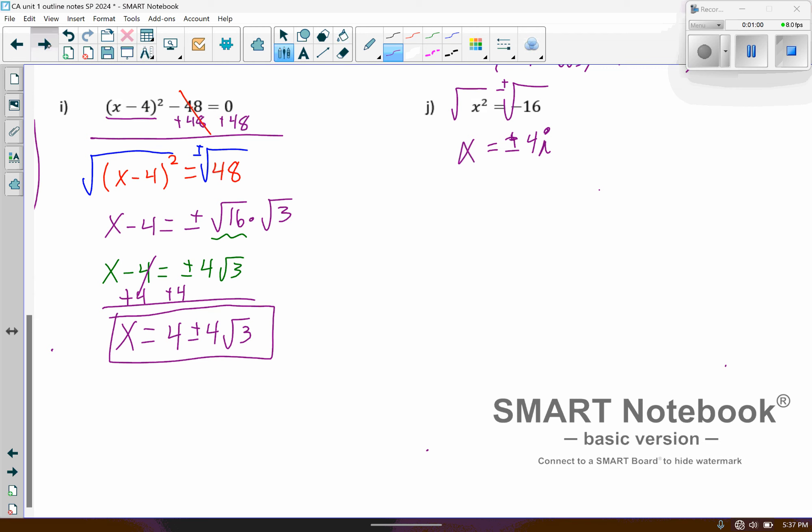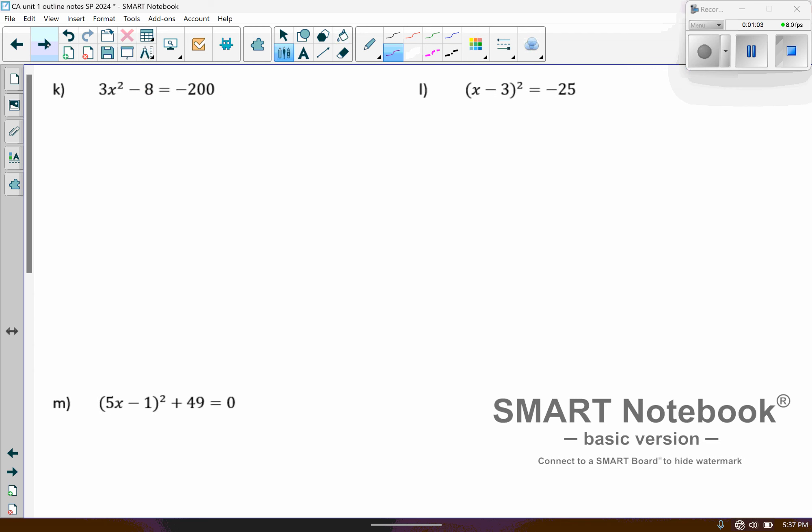Okay, moving on. So here's another one, but prior to using the square root property, we have to isolate the squared value. So we're going to start by adding 8 to both sides. We end up with 3x squared equals negative 192. And then next, we're going to divide both sides by 3.